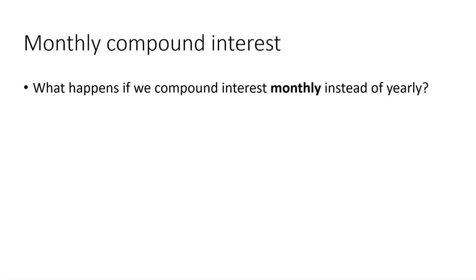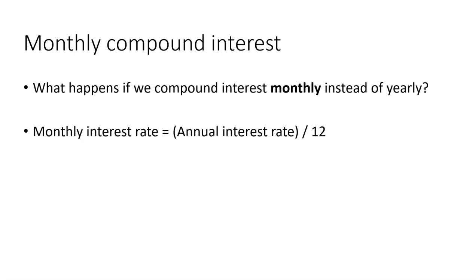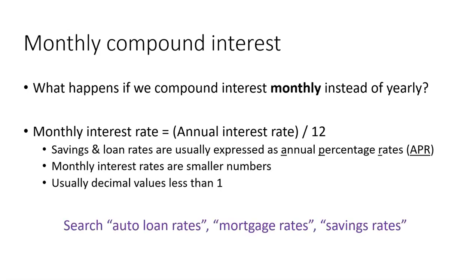But what if we compounded interest monthly instead of yearly, which is how a lot of things really do work? A monthly interest rate would be the annual interest rate divided by 12, because there are 12 months in the year. You need to be aware that for the rest of your life, savings and loan rates are usually expressed as APRs — annual percentage rates. You can learn more about APRs by searching terms like auto loan rates, mortgage rates, and savings rates, and you'll see annual percentage rates. So we'll divide those by 12 to get monthly interest rates.